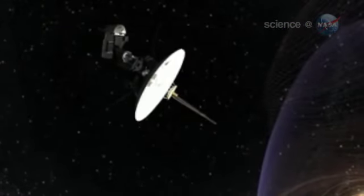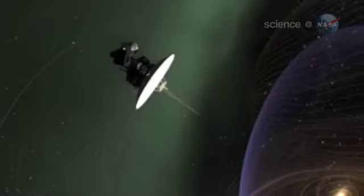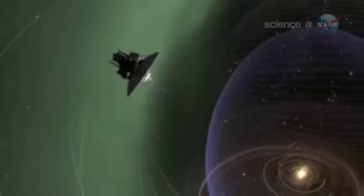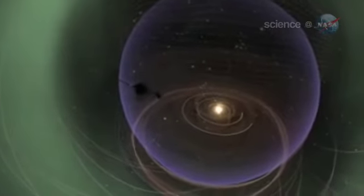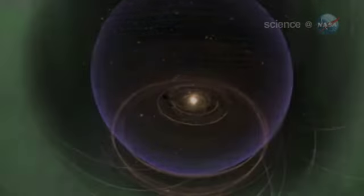Voyager 1 entered the foam zone in 2007, and Voyager 2 followed about a year later. At first, researchers didn't understand what the Voyagers were sensing, but now they have a good idea.